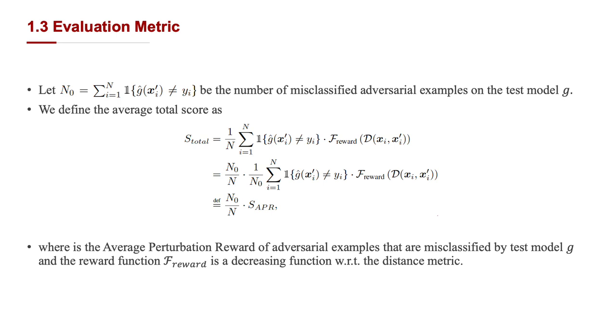Therefore, we choose transfer success rate and the perturbation budget under a certain distance metric as our main evaluation metrics. We only count the misclassified examples on the test model and define the average total score as the following. It factorizes the average total score as the product of transfer success rate and the defined average perturbation reward, which motivates us to find the adversarial example with minimal changes under the metric.